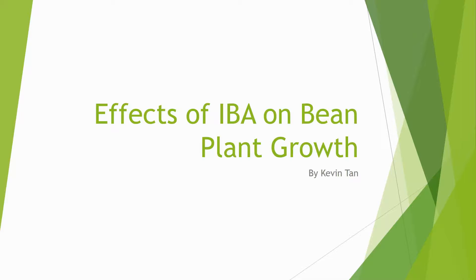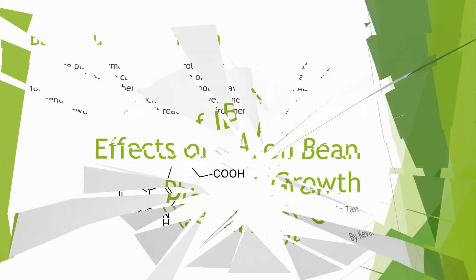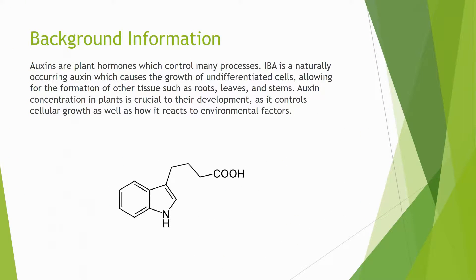Hello everyone, my name is Kevin and for my summer experiment I studied the effects of IBA on bean plant growth. Now let's break it down. IBA is short for indole-3-butyric acid, which is a naturally occurring auxin in some plants. Auxins are plant hormones that are critical to plant development.